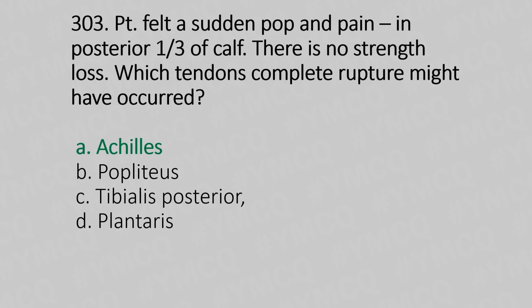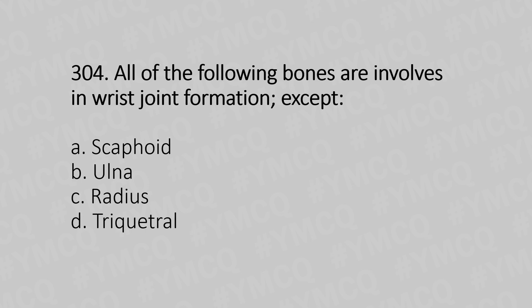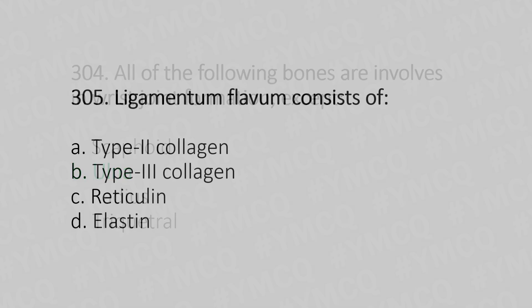Question 304: All of the following bones are included in the wrist joint formation except — Option A: scaphoid. Option B: ulna. Option C: radius. Option D: triquetral. The answer is Option B, ulna.